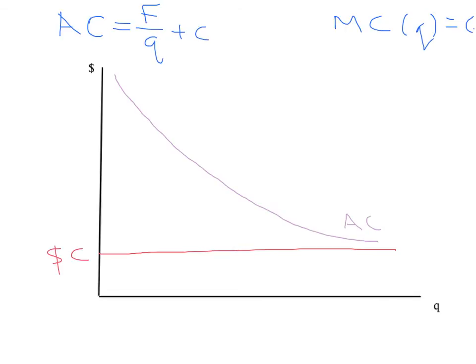Average cost is given by the purple curve and marginal cost by the red curve. This still satisfies our normal rules. Average cost and marginal cost meet effectively at infinite quantity — that's the minimum level of average cost, since average cost keeps falling. Because marginal cost is less than average cost, marginal cost is pulling average cost down.